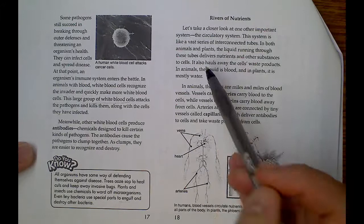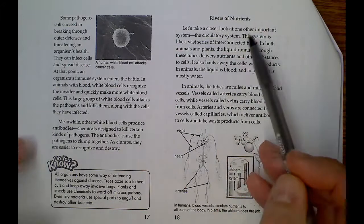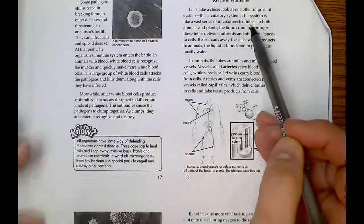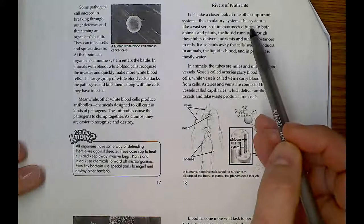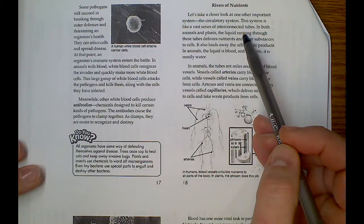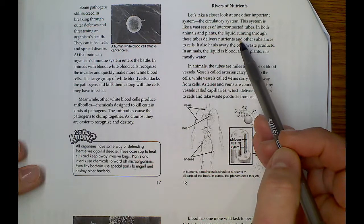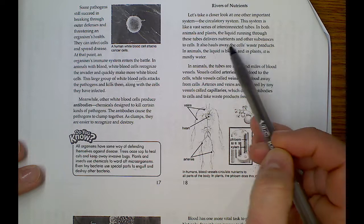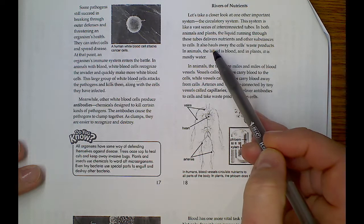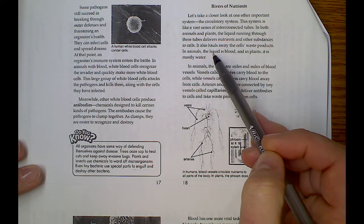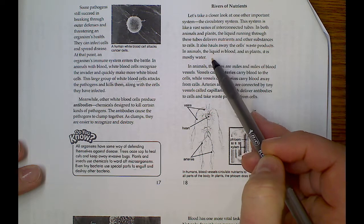Rivers of nutrients. Let's take a closer look at one of the other important systems. So I'm going to make this out just a little bit. The circulatory system. This system is like a vast series of interconnected tubes. In both animals and plants, the liquid running through these tubes delivers nutrients and other substances to the cells. It also hauls away the cell's waste products. In animals, the liquid is blood. And in plants, it is mostly water.